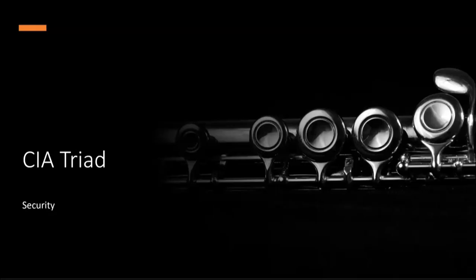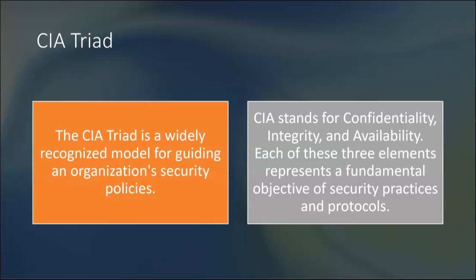What do we have to know about the CIA security triad? It's a widely recognized model for guiding an organization's security policies. CIA stands for confidentiality, integrity, and availability — and that will probably be tested. You'll likely need to know that C stands for confidentiality, I for integrity, and A for availability. Each of these three elements represents a fundamental objective of security practices and protocols.